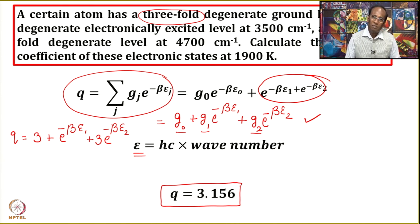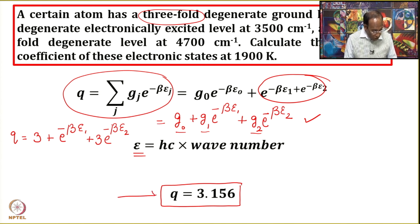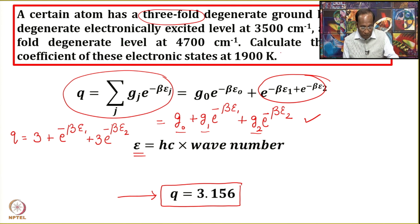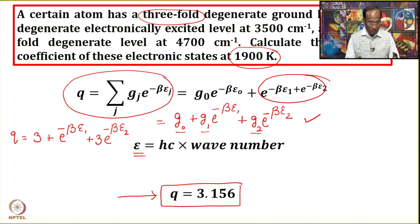Once you put in those numbers, the value of the partition function comes out to 3.156. When you compare this with the translational partition function — which for a gas molecule free to move in three dimensions is of the order of 10²⁵ to 10²⁶ — the electronic contribution is not very high, only 3.156, even at a temperature as high as 1900 Kelvin. This is just a demonstration of how to expand the expression for partition function considering the available energy levels.